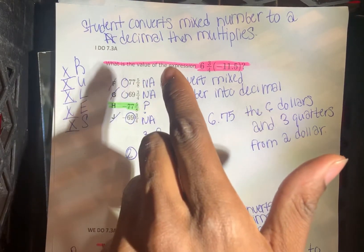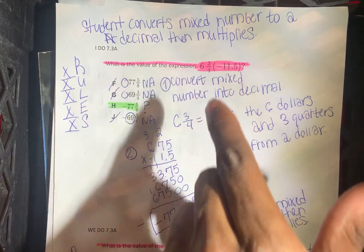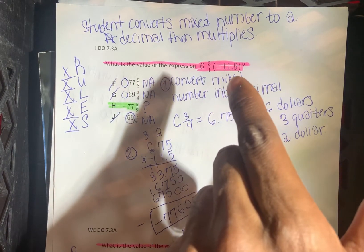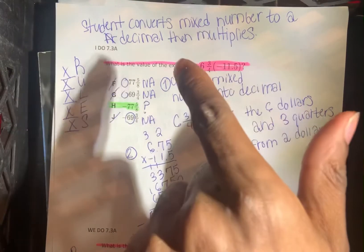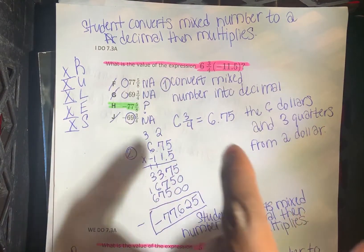What is the value of the expression 6 and 3 quarters multiplied by negative 11.5? Whenever you see the parentheses, that means multiplication.